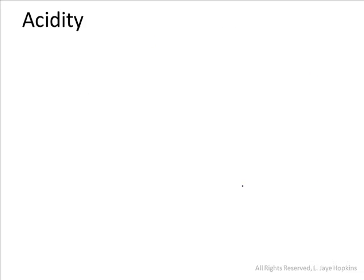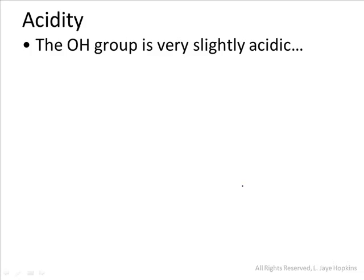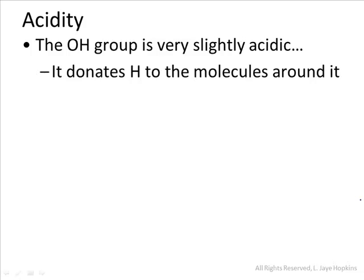To finish up talking about alcohols, I want to talk about the topic of acidity. The OH group itself is very slightly acidic. A review from general chemistry will remind you that acidity means that a molecule donates hydrogen to the molecules around it. The Arrhenius and Bronsted-Lowry definitions both say that a molecule is an acid if it donates hydrogen, releases hydrogen, or dissociates from hydrogen — basically, if hydrogen can break off from that molecule.